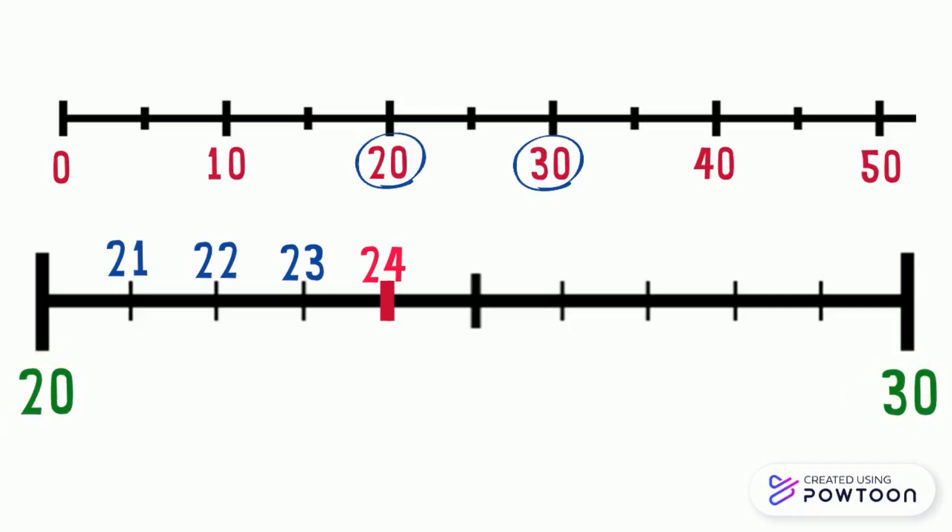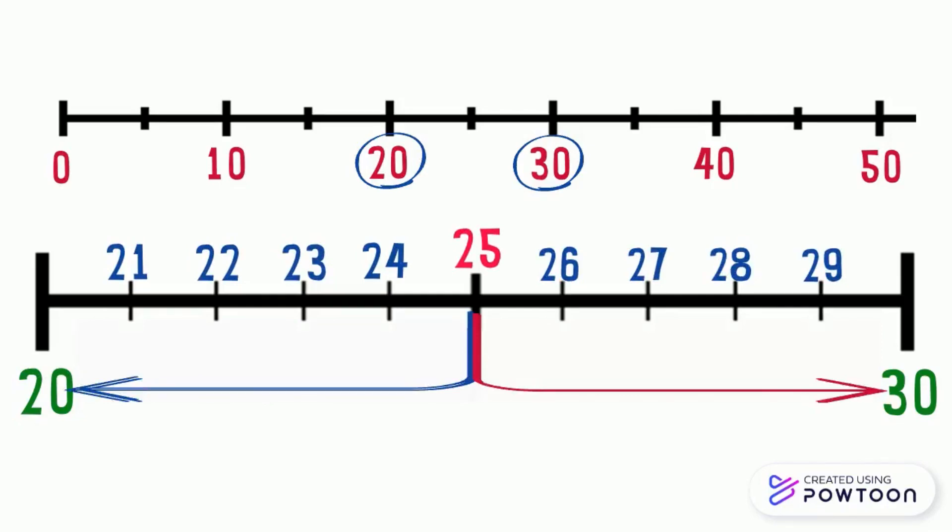By observing the number line, we notice that the number 24 is closer to 20 than it is to 30, so the nearest 10 to 24 is 20. And we can say that the number 25 is as close to 20 as it is to 30, so this number is placed in the middle of these two tens which are 20 and 30.